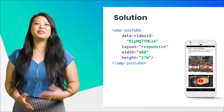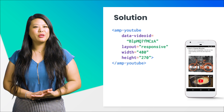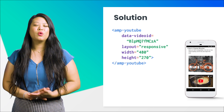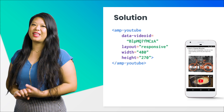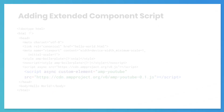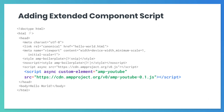And here's the solution. We've got an AMP YouTube tag with the video ID, the layout, the width, and the height. Here's how you should have included the AMP YouTube JavaScript library — this looks similar for all extended components; all that needs to change is the file name. In this case, that's amp-youtube-0.1.js.